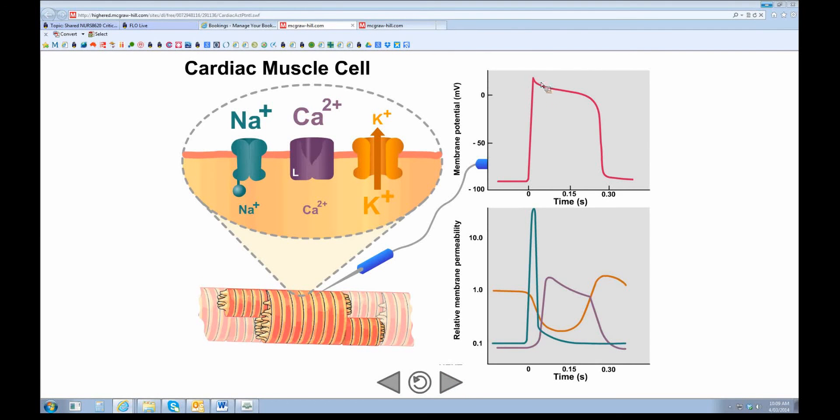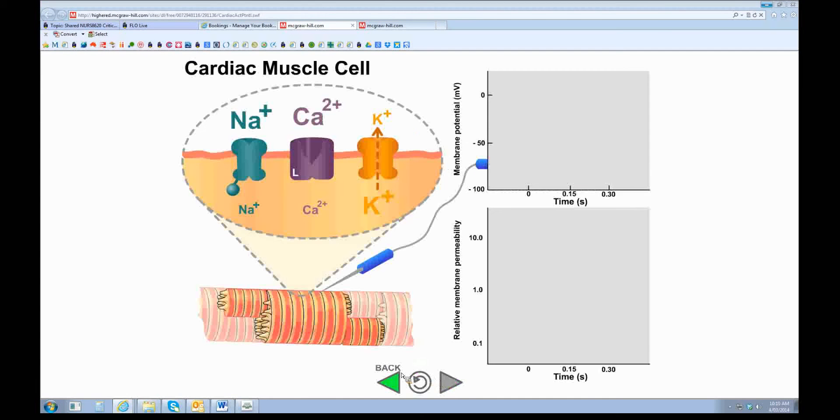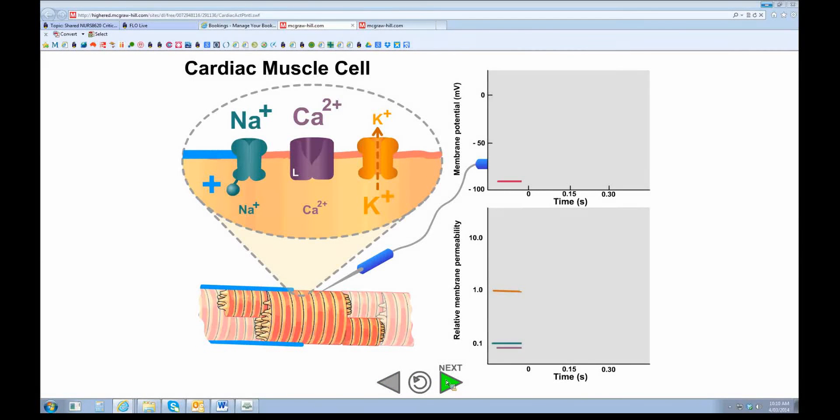We have our action potential drawn there. We go up and then we get depolarization and repolarization. Down at the bottom we've got a relative membrane permeability chart: green is sodium, orange is potassium, and purple is calcium. The membrane - this is where the electrical current hits the particular cell - and then we get a sudden rush of sodium into the cell.